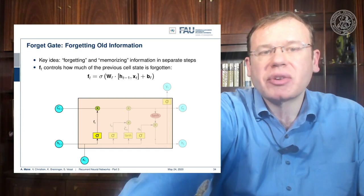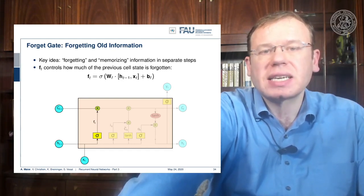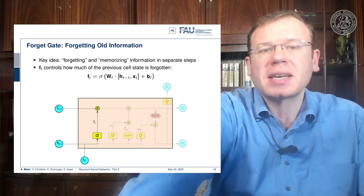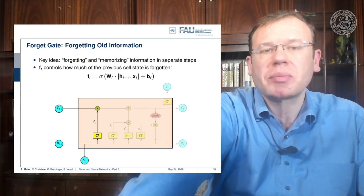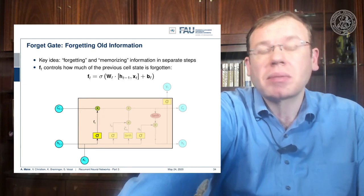So the forget gate FT controls how much of the previous cell state is forgotten. You can see FT is computed by a sigmoid function, so it's somewhere between zero and one, and it's essentially computed with a matrix multiplication of a concatenation of the hidden state and XT plus some bias.